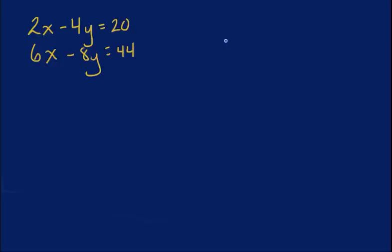I have a negative 8y, so the opposite of that would be a positive 8y. So by doing that, I'm going to look at this negative 4y right here. I know a lot of people say, but Brian, it's 2x minus 4y. I don't know where that negative comes from.